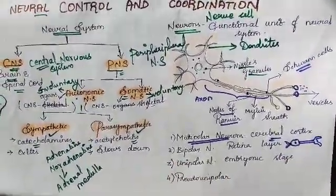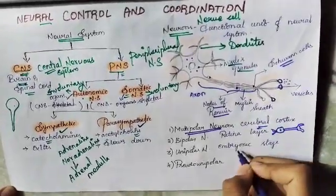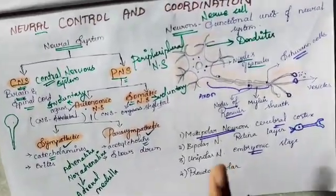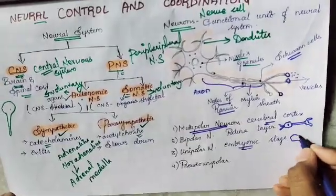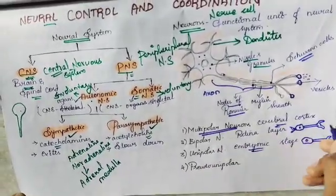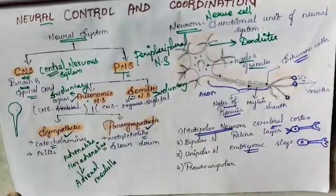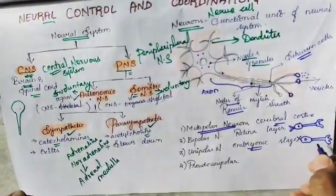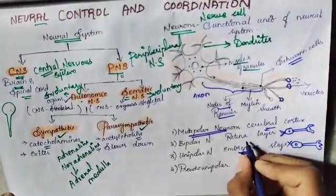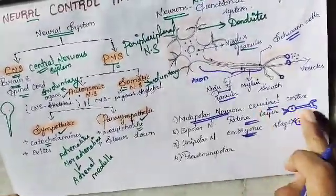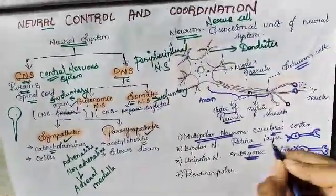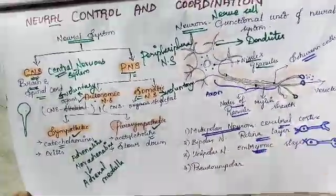Unipolar neurons we have only in the embryonic stage, not in adults. In the embryonic stage we have unipolar — one cell body and one axon, no dendrite. In bipolar, we have one pole of dendrite and one pole of axon. Bipolar neurons are seen in the retina — specifically the middle layer of the retina. Multipolar neurons are found in the cerebral cortex.